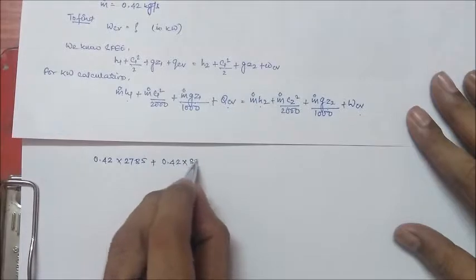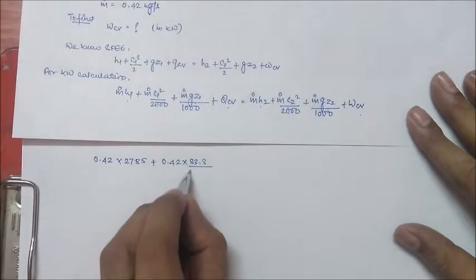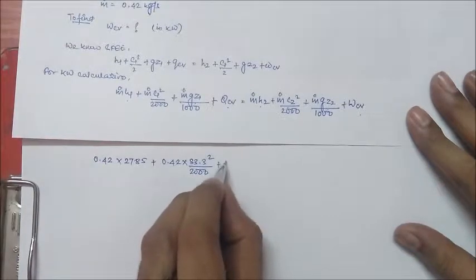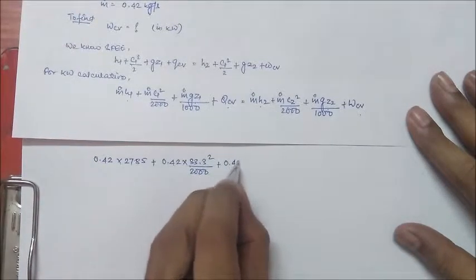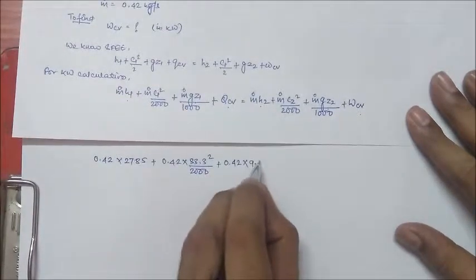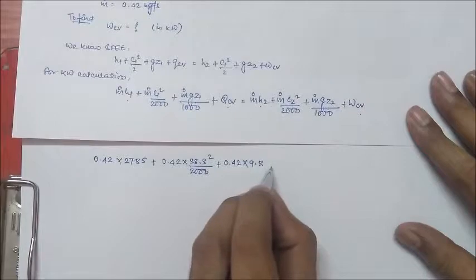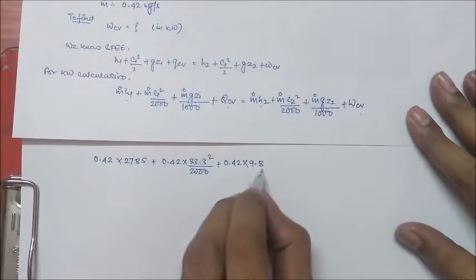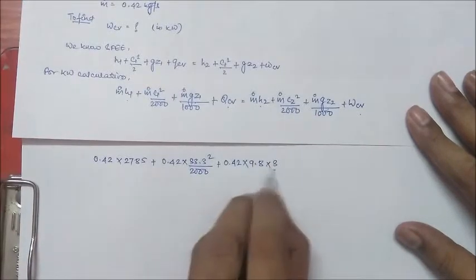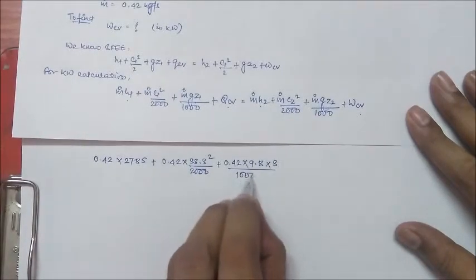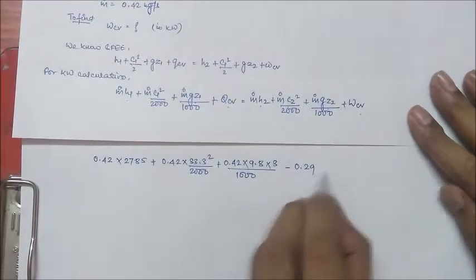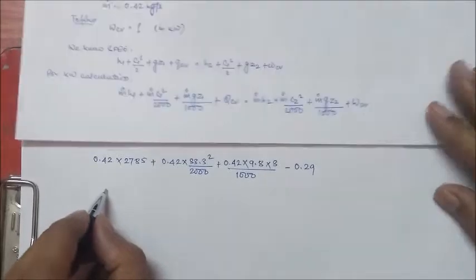C1 is 33.3 square by 2000, plus m dot is 0.42 into G is 9.8 meter per second square, that is acceleration due to gravity, Z1 is 3 by 1000, minus 0.29.